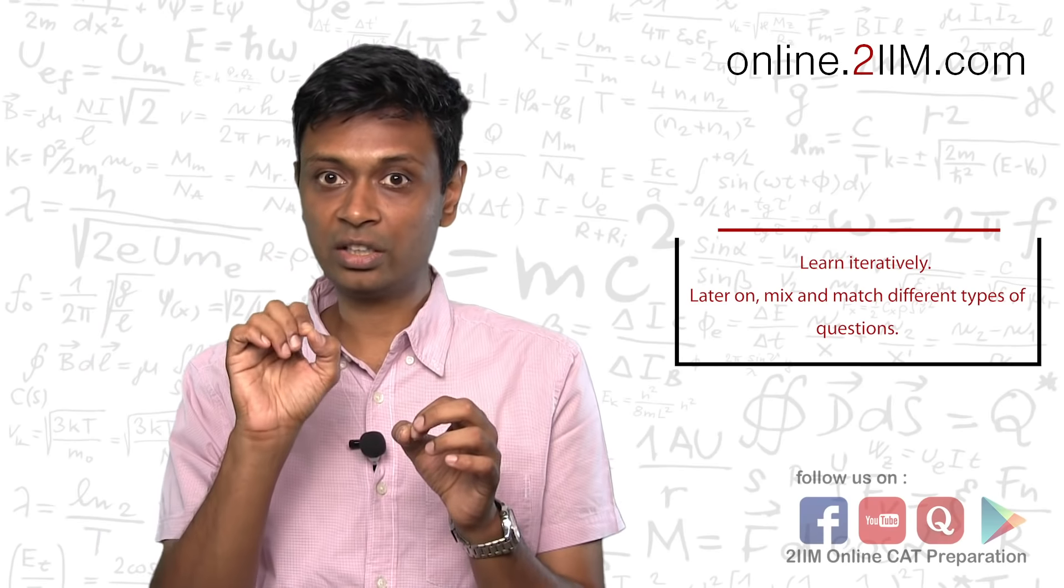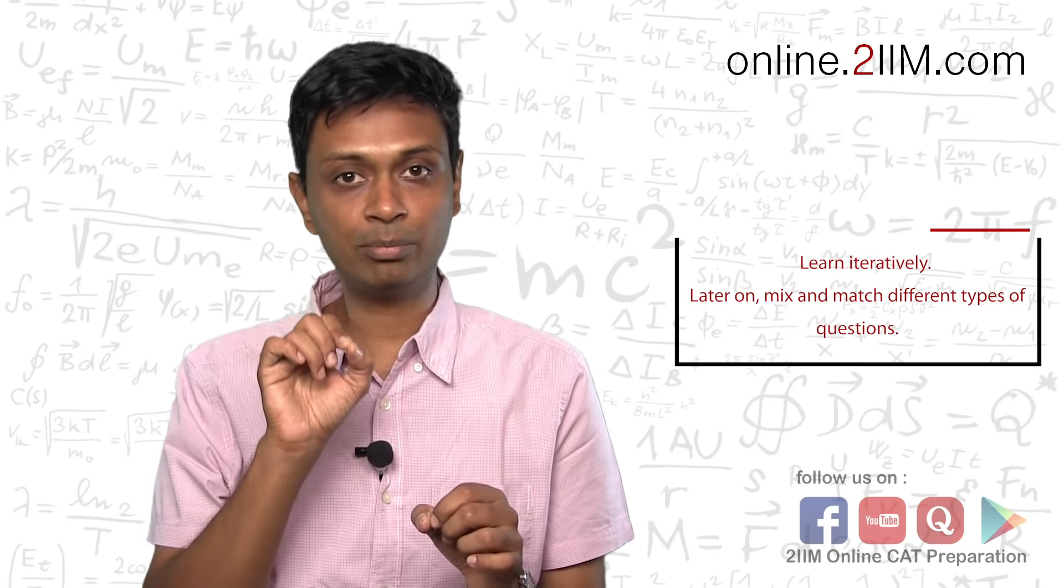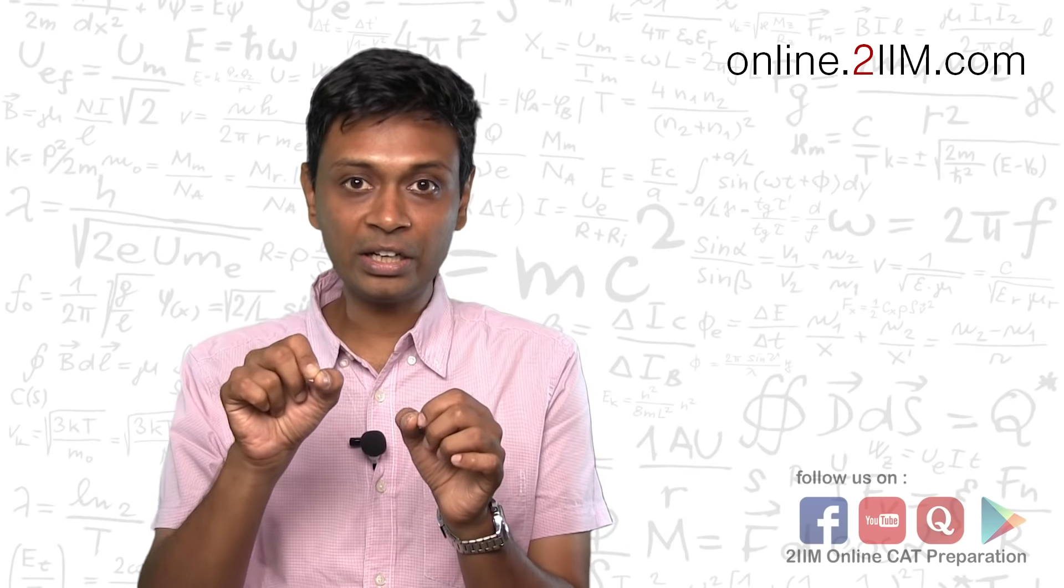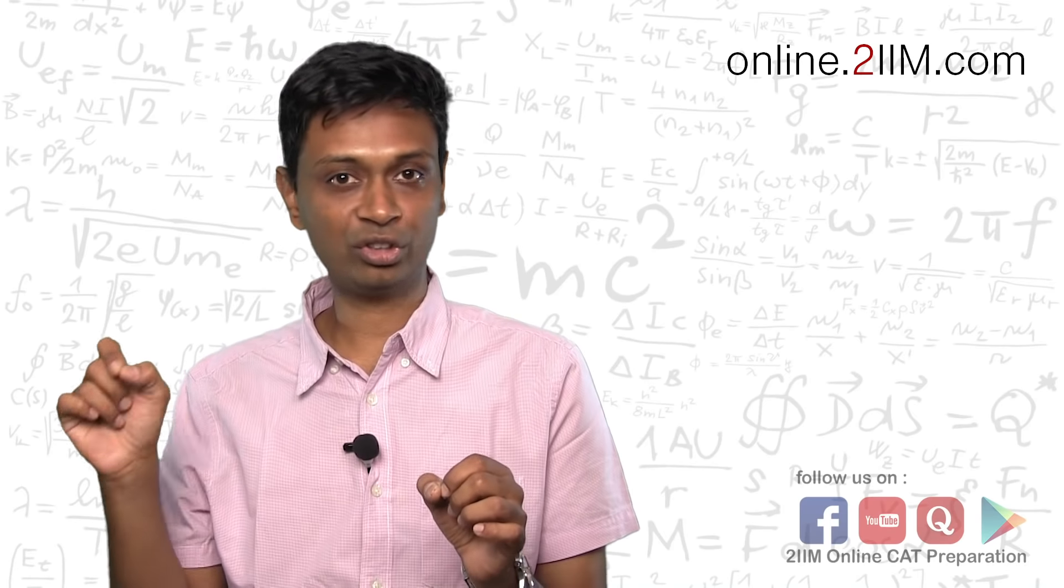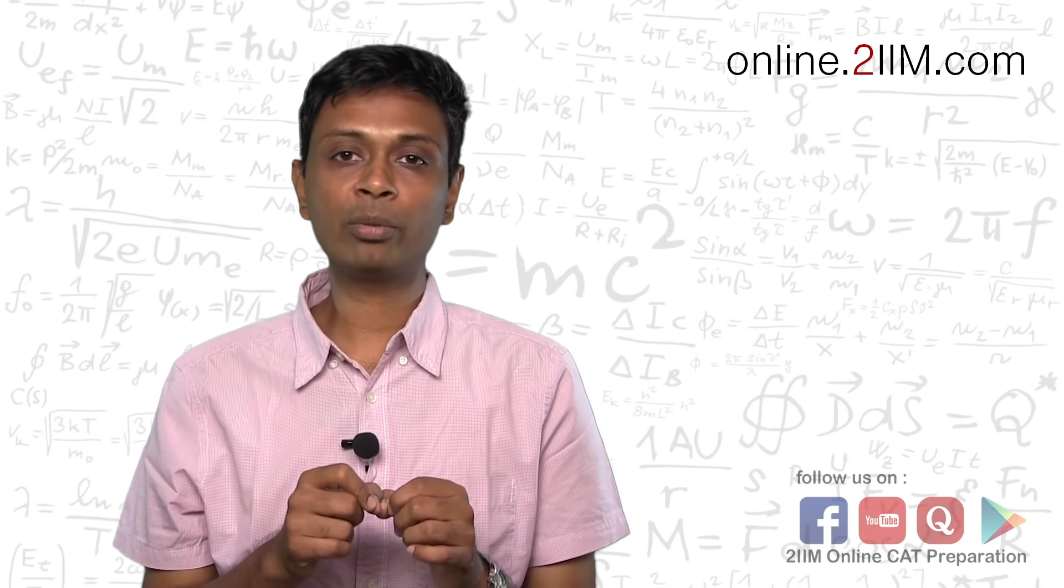'If this kind of context comes, I need to think about congruence. If this kind of context comes, these three circle properties are important.' You plug that in during your second iteration and revisit. Should you skip geometry? Most...